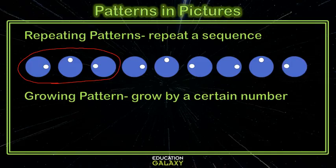A growing pattern grows by a certain number. So for example, if we start with this square, and then take that same square, but add one square on the top and one square on the right.